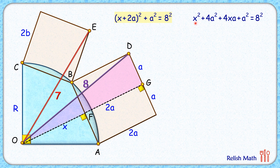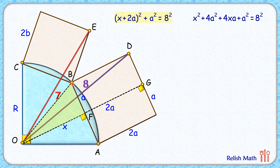We need the value of x² + a², so let's join OB. In triangle OFB, BF equals a centimeters and OB, the hypotenuse, is the radius r. So x² + a² = r². Replacing x² + a² with r² in our equation gives us our first equation from the first square.